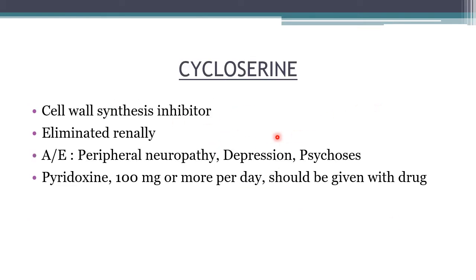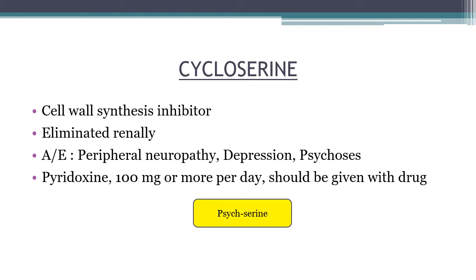Cycloserine is a cell-wall synthesis inhibitor and a structural analog of D-alanine. It is eliminated renally and can produce peripheral neuropathy, depression, and psychosis — pyridoxine should be co-administered to ameliorate neurotoxicity. The neuropsychiatric symptoms are so common that the drug has earned the nickname 'psychoserine.' Symptoms range from headache and somnolence to severe psychosis, seizures, and suicidal ideation. Cycloserine must be used with caution in depression and is contraindicated in epilepsy.